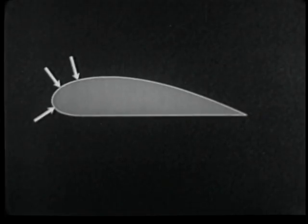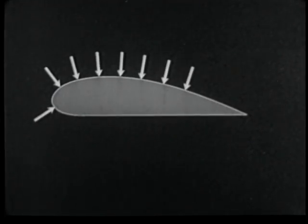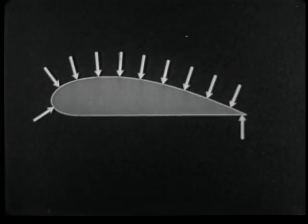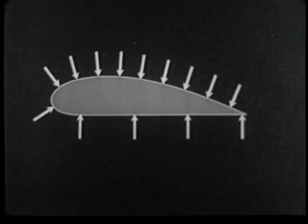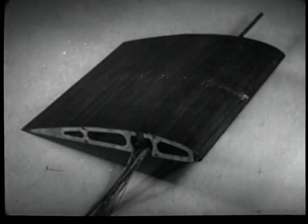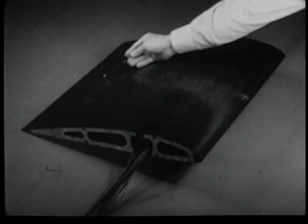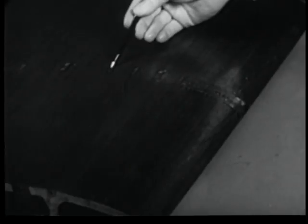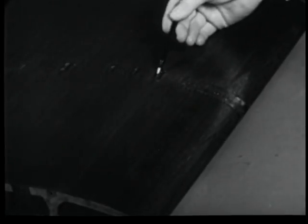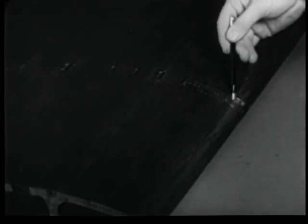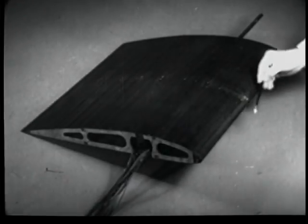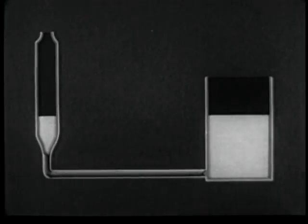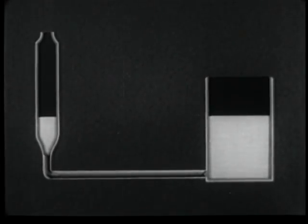The air pressure at various points on an airfoil is measured in order to determine the airfoil's efficiency or its suitability for a given purpose. The measurements are made by building into a model airfoil small copper tubes which are sealed flush with the surface of the model. These tubes extend from the model to a pressure measuring device outside the tunnel. The device is called a manometer.